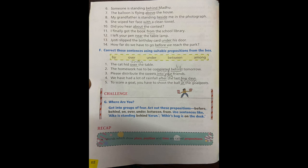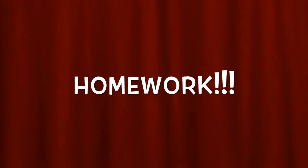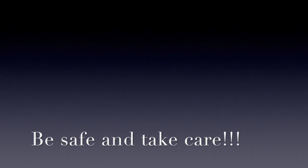So children, we are done here with this chapter. What did we learn? That the words which show place, position, and time are called prepositions. There is a worksheet related to this chapter in the link provided below. Open the PDF and complete the worksheet. I'll see you in the next video. Till then, be safe at home and take care.